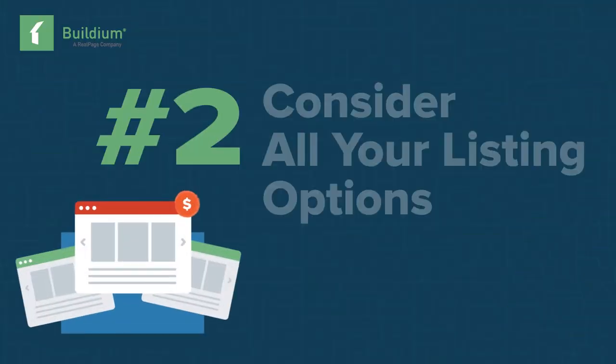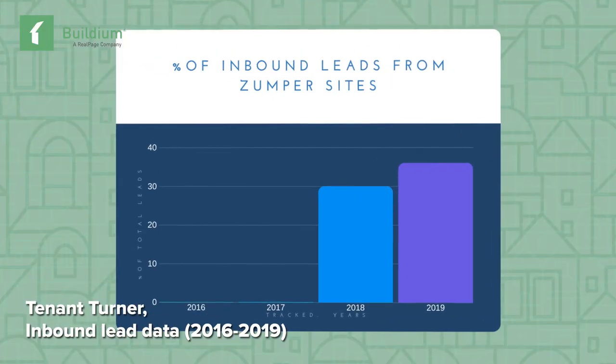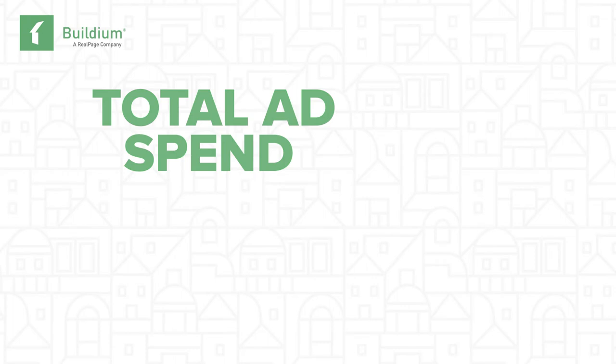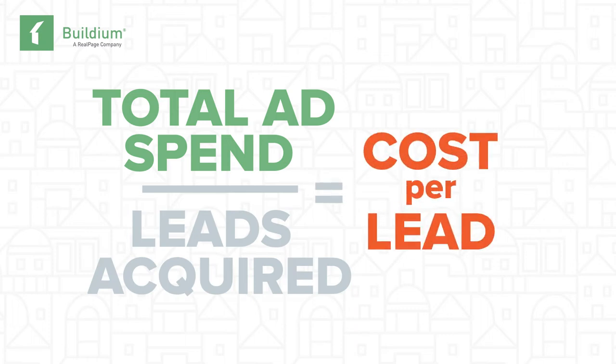Number two: consider all your listing options, especially the free ones. While there are paid listing sites readily available, if you can fill a vacancy and get good leads through a free channel, then why wouldn't you? According to research from Tenant Turner, the majority of leads actually originate from free listing sites. Zillow is starting to charge in some markets, but there are plenty of other options still available through sites like Zumper or Facebook Marketplace. A metric you'll want to look at to measure profitability is your cost per lead — take the dollar amount of your ad spend, which could include any listing fees, and divide it by the amount of leads you actually got. You can further segment this number by lead source to evaluate its performance.